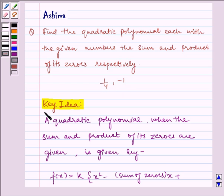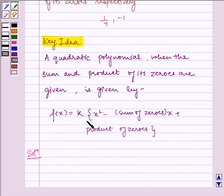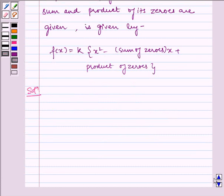Let us understand the key idea first. A quadratic polynomial when the sum and product of its zeros are given is given by f(x) = x² - (sum of zeros)x + (product of zeros). Now let us write the solution.